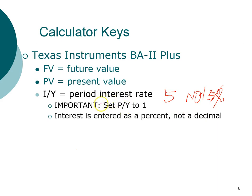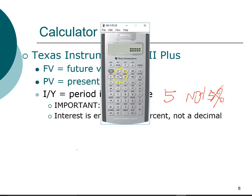Another important setting: set the P/Y register to one. P/Y is a second function, so to access it you first press the second key — you'll see 'second' on the display — then press the P/Y register. If it shows one, you're all set. If it's set to 12, just press the number 1 and then press the Enter key, and it is set.